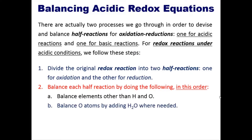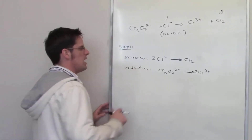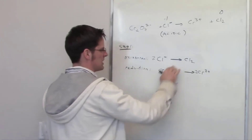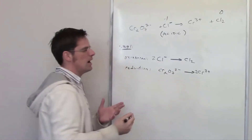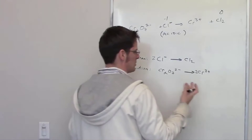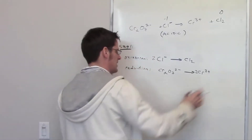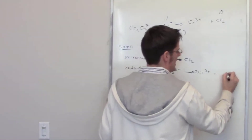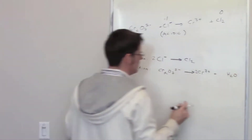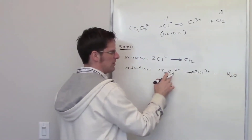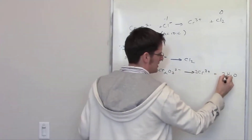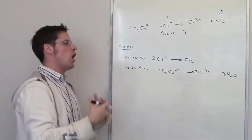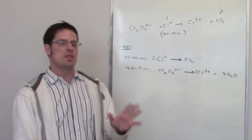The next step says to balance oxygen atoms by adding H₂O where needed. There are no oxygen atoms in the oxidation half reaction, but there are oxygens in the reduction half reaction. The H₂O molecules go on the right side to balance the oxygens on the left. There are seven oxygens on the left, so I put a coefficient of seven in front of H₂O. Oxygens are now balanced.